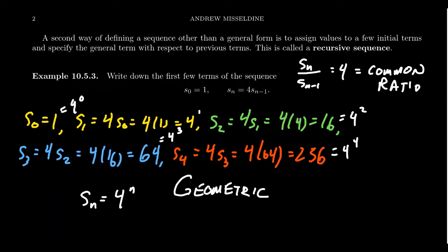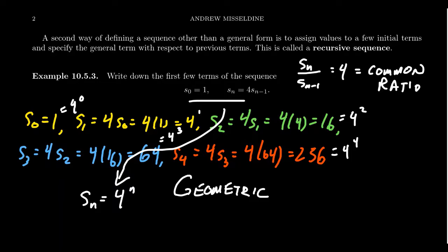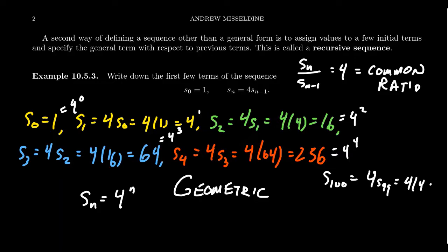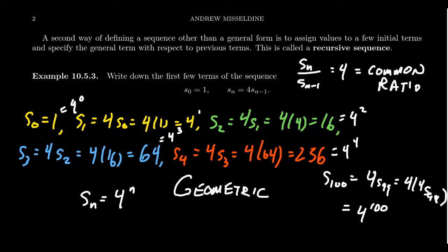A sequence can be defined recursively, but it's often possible to convert from a recursive definition to a general term, which can be very useful. The major hiccup about recursion is that if I want to calculate the 100th term, it's 4 times the 99th, which requires the 98th, and so on — you have to move backwards and know all the previous terms. With a general formula, the 100th term is simply 4¹⁰⁰. But using a recursive sequence also makes sense conceptually, like a dynamical system where each term depends on its predecessor.